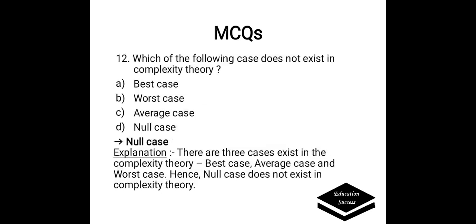Which of the following cases does not exist in complexity theory? a) best case, b) worst case, c) average case, or d) null case. Correct answer is null case. There are three cases in complexity theory: best case, average case, and worst case. Hence, null case does not exist in complexity theory.